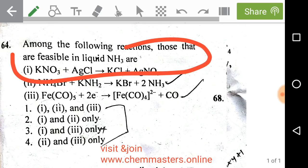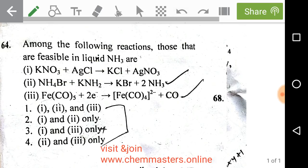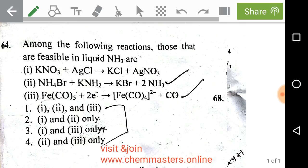Among the following reactions, those that are possible in liquid ammonia: here we have KNO3 reacting with silver chloride producing KCl plus silver nitrate. This is simply a precipitation reaction and it is possible in liquid ammonia, so the first reaction is correct.